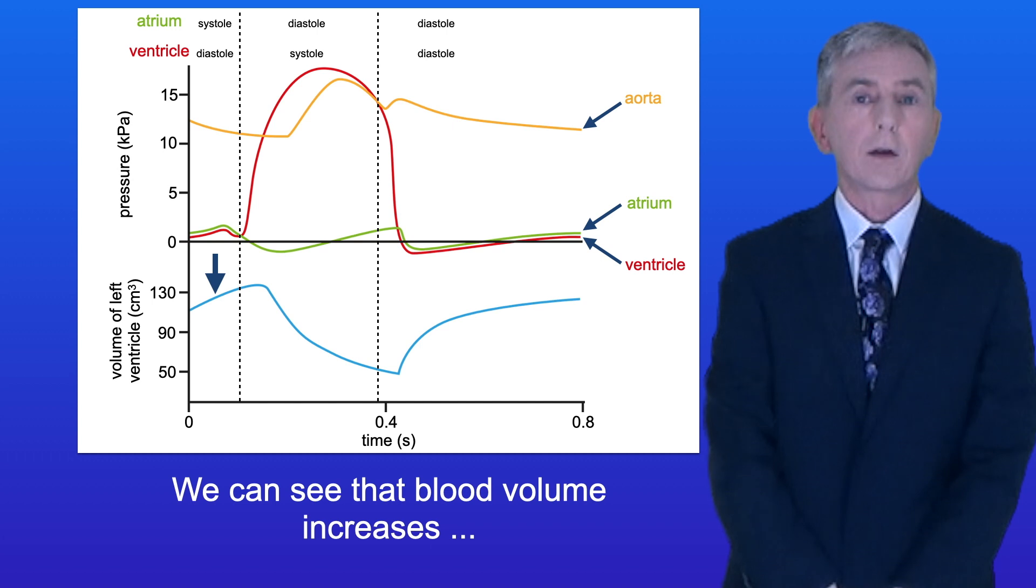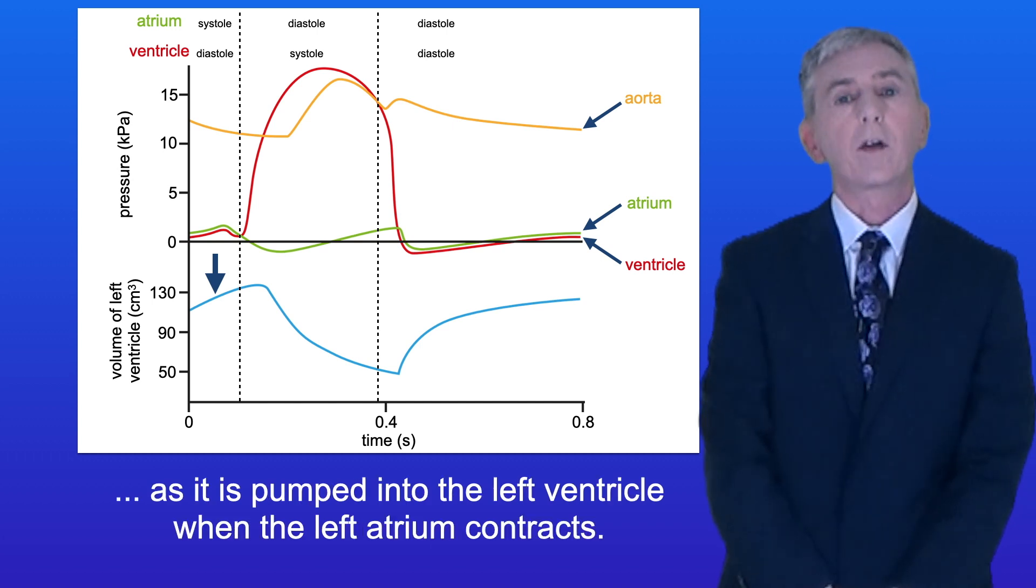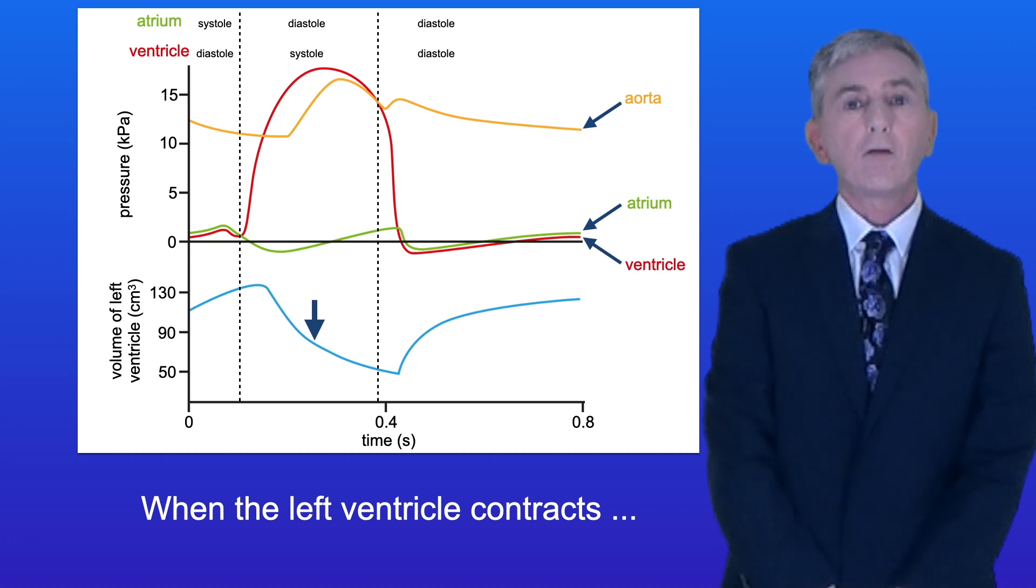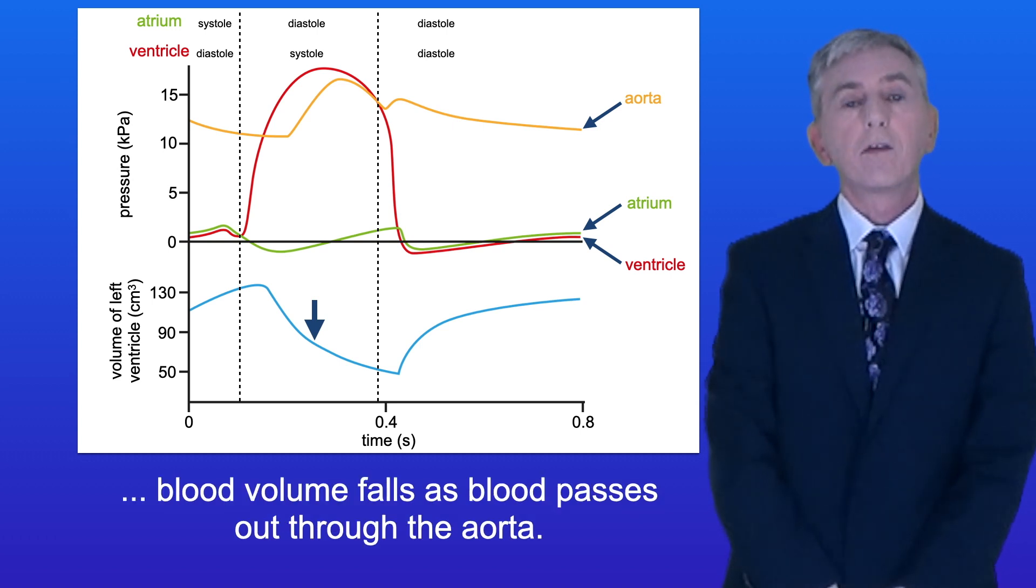We can see that blood volume increases as it's pumped into the left ventricle when the left atrium contracts. When the left ventricle contracts, blood volume falls as blood passes out through the aorta.